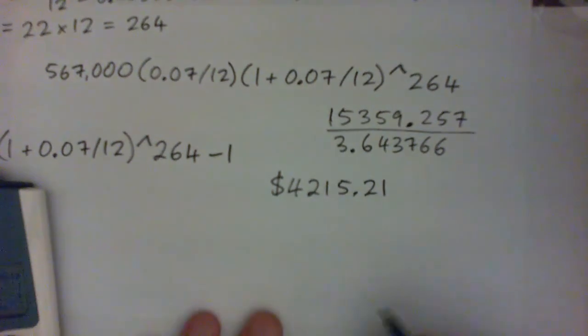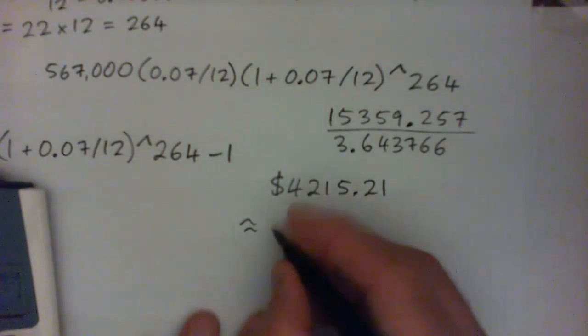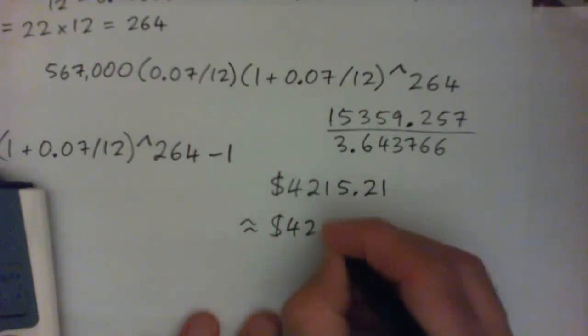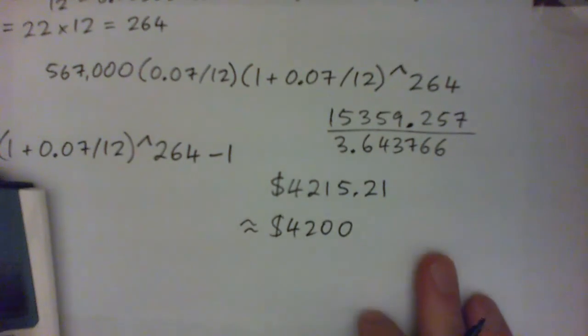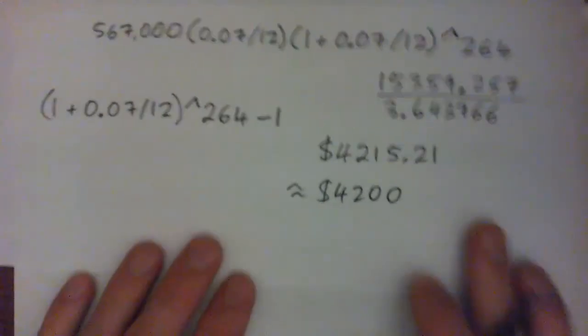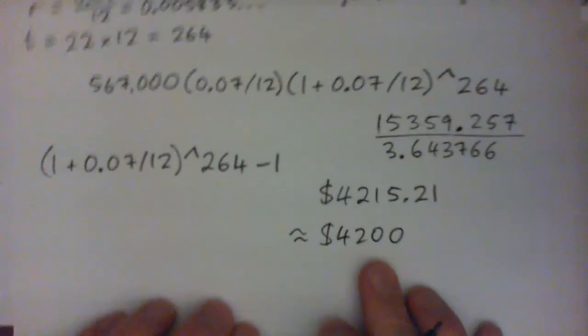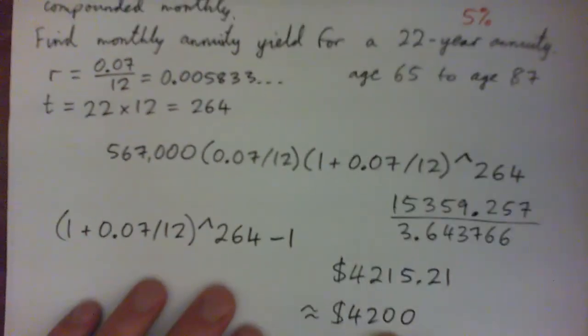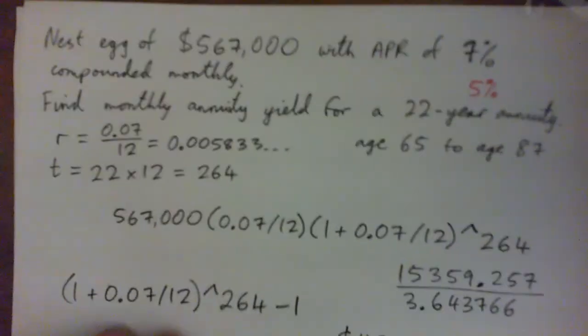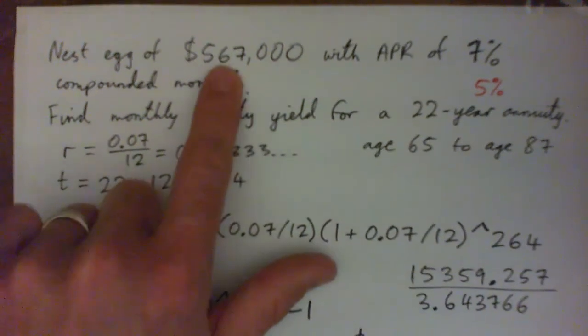But in layperson's terms, I mean, approximately $4,200 a month, which isn't bad. And remember, you'll get Social Security on top of that and possibly other things if you've got everything. So my goodness, if you save a half million for retirement, you're in good shape.